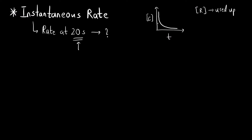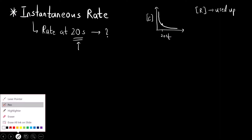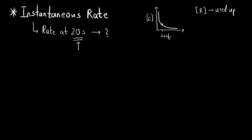Now, how do you find out the instantaneous rate? Suppose here is the 20-second mark. What I will do is find out the slope at this point. The general formula for slope is y = mx + c, where c is the y-intercept and m is the slope. Here there is no y-intercept, so c is 0, and the plot is y = mx.